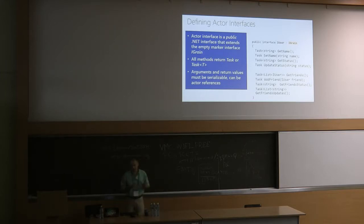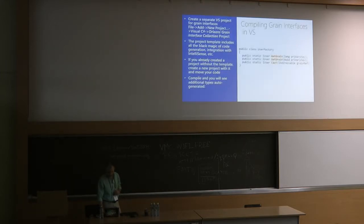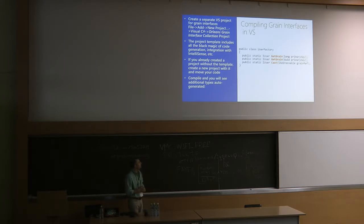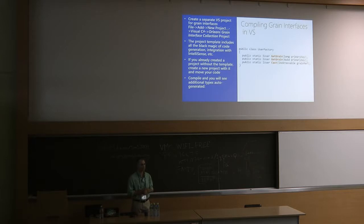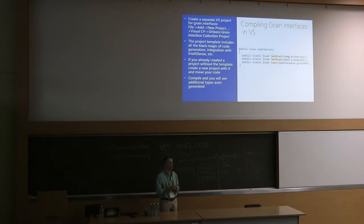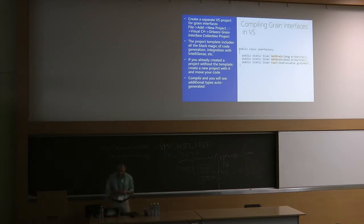Once you define the interface and compile it, the code generation tool will automatically generate a factory class with key methods. GetGrain is what we're after — it takes the identity of the grain in the space of that type, in this case the UserGrain type. By default the identity is a GUID — a 16-byte array. Long is just a shortcut so you can pass a long integer, which will be internally turned into a GUID with half being zero. You can use integers as identifiers if that's convenient.